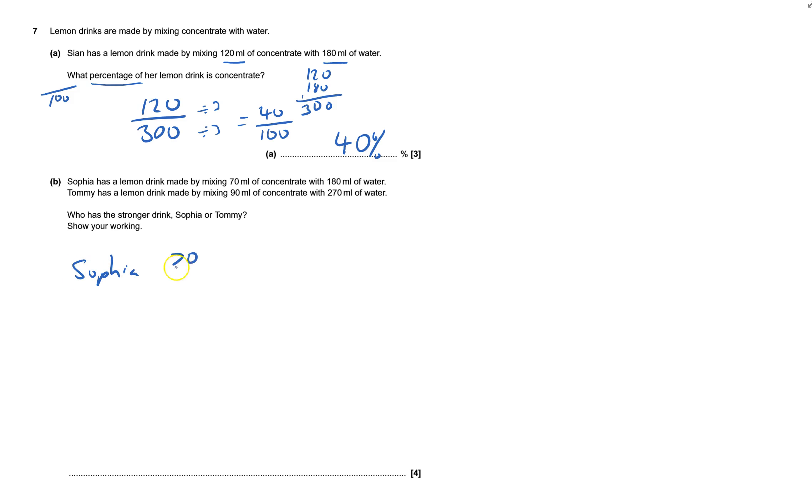It's 70 out of, and I've got to do 70 plus 180, that is 250. So 70 out of 250, if I times top and bottom by 4, that will give me out of a thousand, and that'd be 280 out of a thousand, or divide top and bottom by 10, 28 percent.